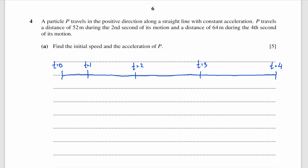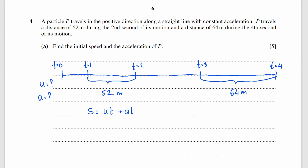The particle travelled 52 metres during the second of its motion, so from t equals 1 to t equals 2 the particle travelled 52 metres. Likewise, from t equals 3 to t equals 4 the particle travelled 64 metres. We're looking for u, the initial velocity, and the acceleration. We'll use the SUVAT equation s equals ut plus at squared over 2.